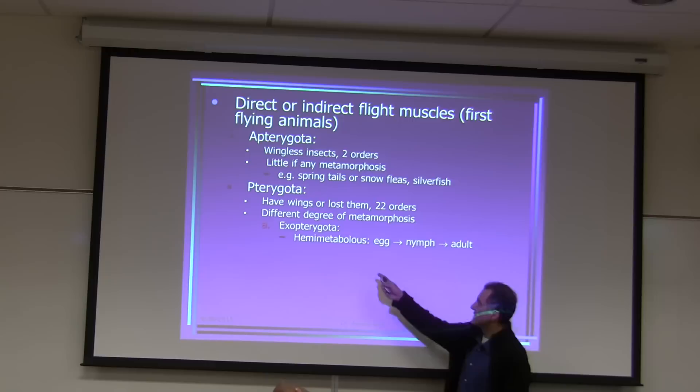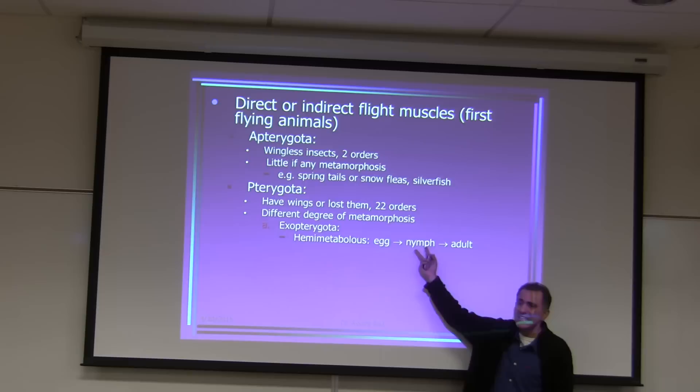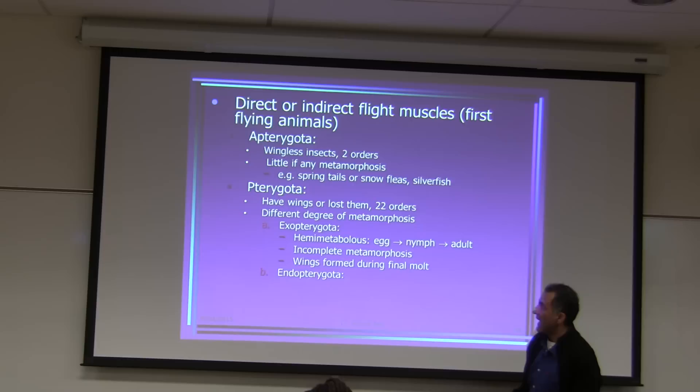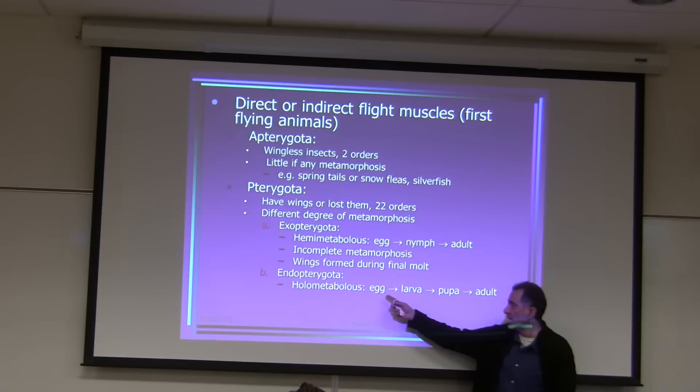Hemimetabolous means almost complete metamorphosis: the egg becomes a nymph, and the nymph becomes an adult. A nymph looks similar to an adult. Holometabolous means complete metamorphosis: egg becomes larva, larva becomes pupa, and pupa becomes adult. The larva and pupa do not look like the adult.